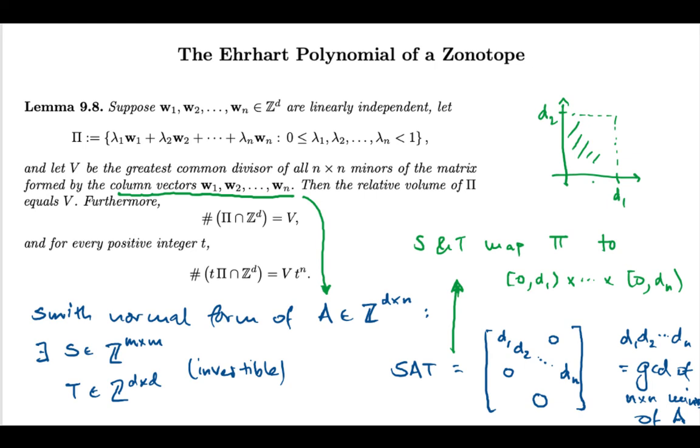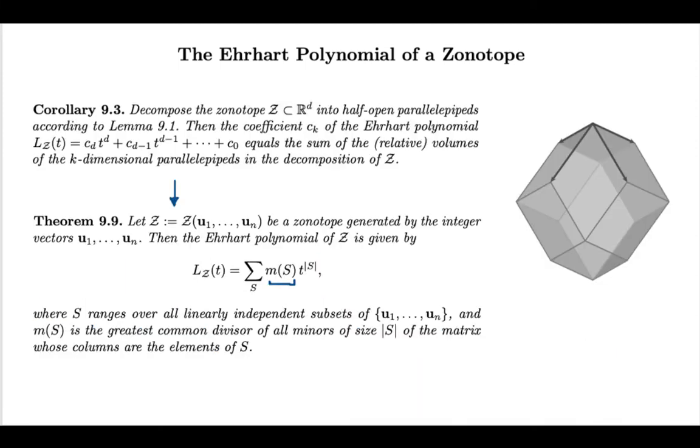And so Smith normal form tells me that this product is equal to the GCD of all the minors of my original matrix A. But my matrices S and T, because they were invertible matrices, they preserve volume. And so the volume of my original parallel pipette is equal to the volume of this new sort of easier rectangular parallel pipette. And we know that volume. And so if I put everything together, I get lemma 9.8. And again, since this was the main ingredient of this theorem 9.9, this shows why this theorem holds.